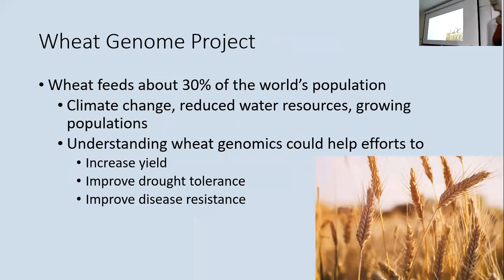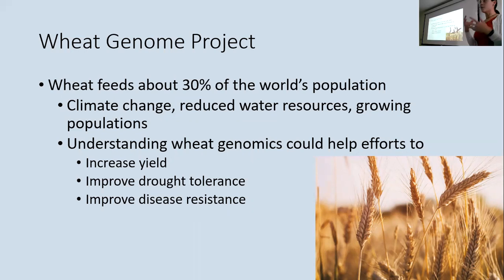After the Human Genome Project, one project that came along was the Wheat Genome Project. Not as successful, but with the best of intentions — wheat feeds about a third of the planet and is a major component of the diet of a lot of people on Earth. We're dealing with climate change, droughts, water loss, growing populations, increased disease, and urbanism. If we could sequence the wheat genome, we could potentially work with wheat to increase its yield, make it drought tolerant, disease tolerant — all the things we do with corn and rice.